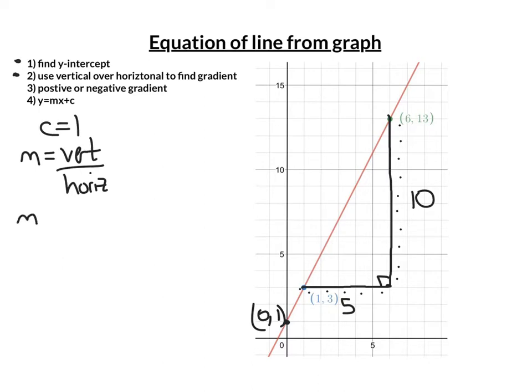So I've got m equals vertical 10 over horizontal 5. It's going up from left to right, so it's a positive gradient. So m equals 2.